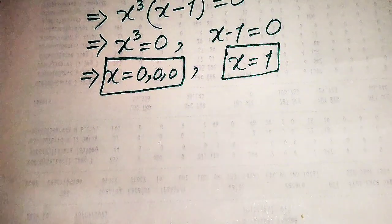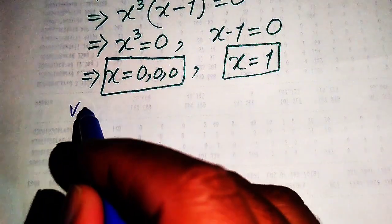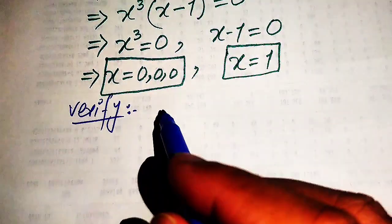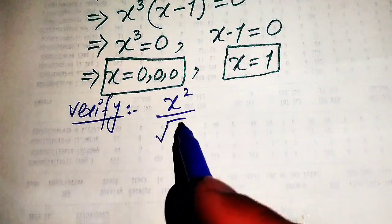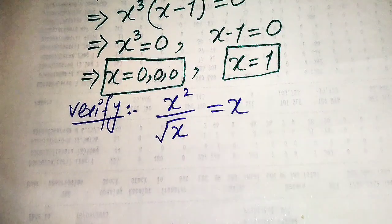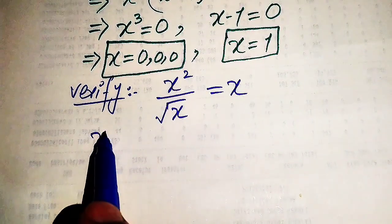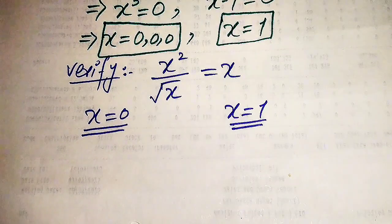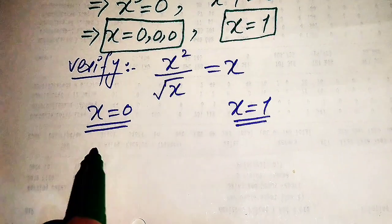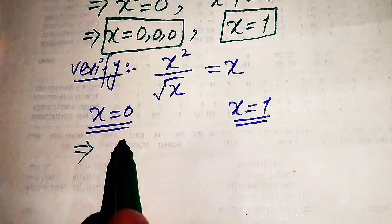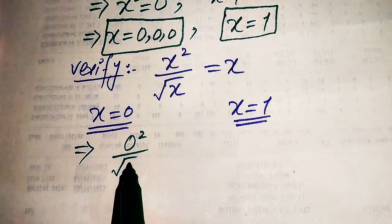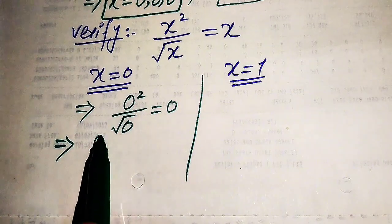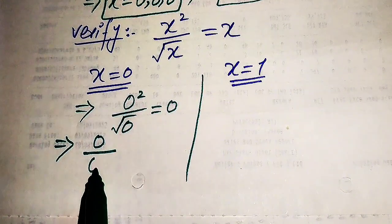We now verify whether these roots are solutions or extraneous roots. The given equation is x² divided by √x equals x. First we check x equals 0: substituting gives 0² divided by √0 equals 0, which simplifies to 0 divided by 0 equals 0.